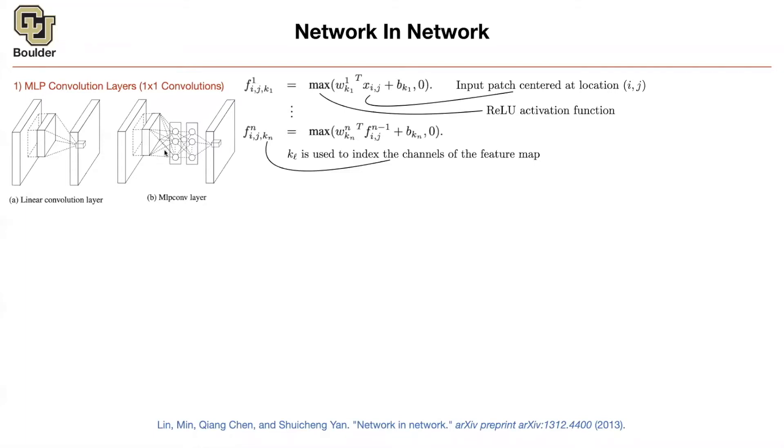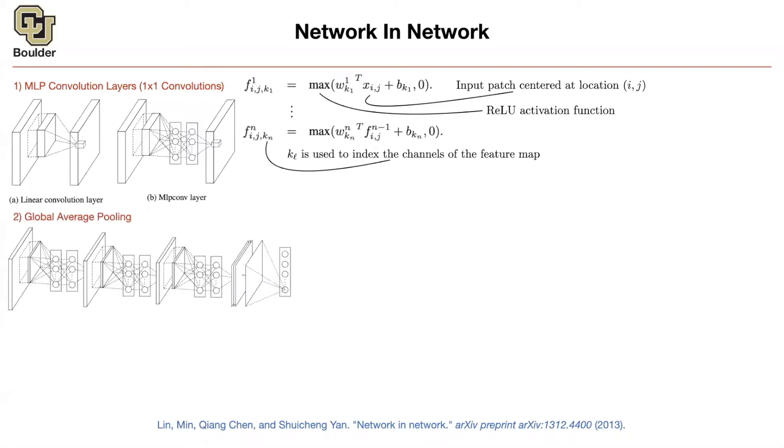And they also introduced global average pooling and they replaced the last layer. If you remember from AlexNet, the last couple of layers were fully connected. They said you don't need to do that. You can just average your pixel values per channel and those are going to give you your vector, the one that you want to work with in the end and use it for classification purposes.